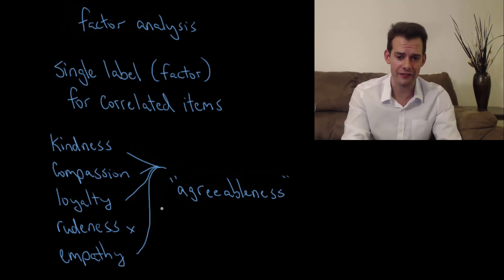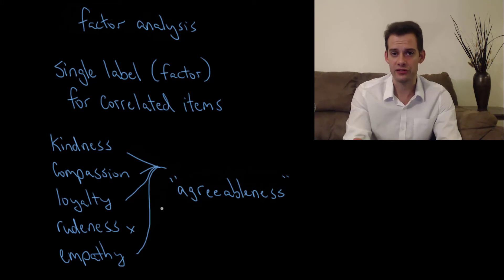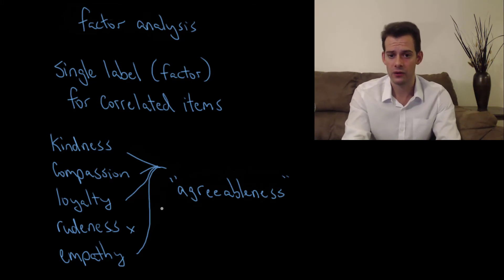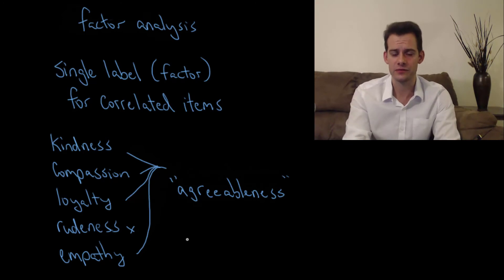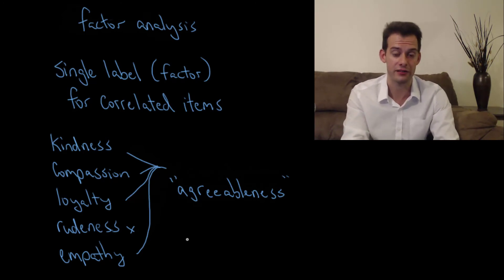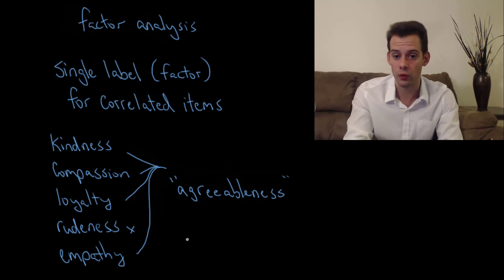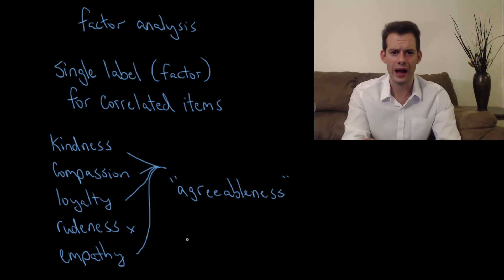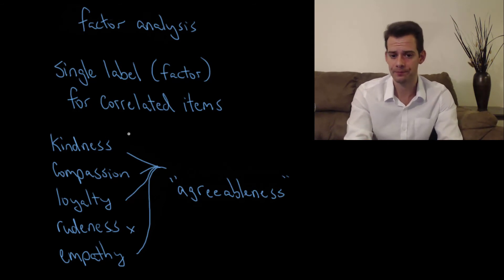The next question is: how many of these factors should we be trying to pull out from our data? How much can we group things together? Are we going to have just a few factors or many factors? After all we had 18,000 words before — so how many factors can we narrow that down to?